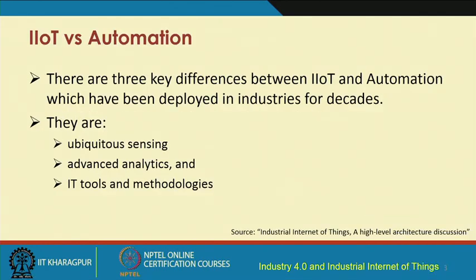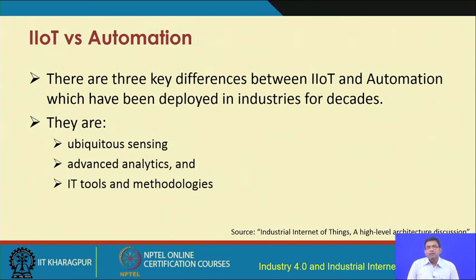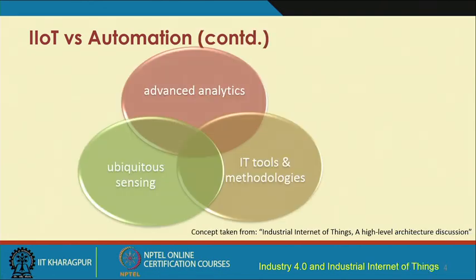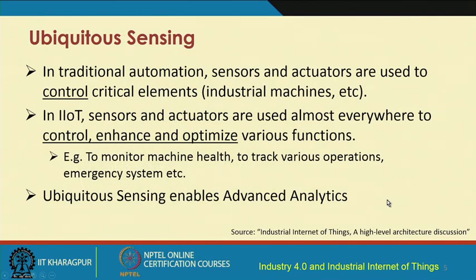IIoT and its primitive have been there before. Its primitive is the automation that has been in industry since decades. There are key differences between IIoT and automation with respect to three different parameters: sensing, analytics, and the IT tools and methodologies being used. These differences with respect to sensing, analytics, and methodologies each have their own different facets.